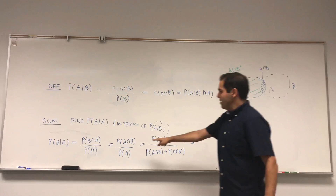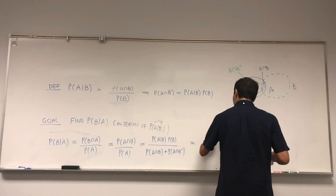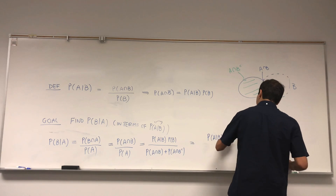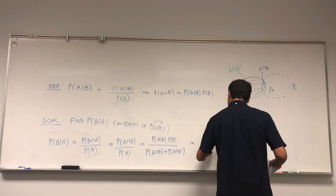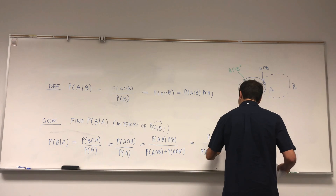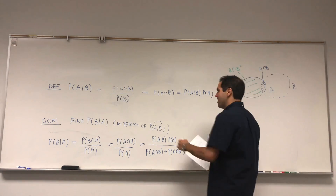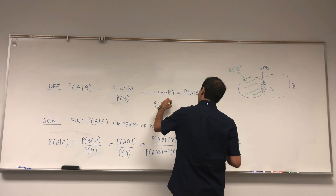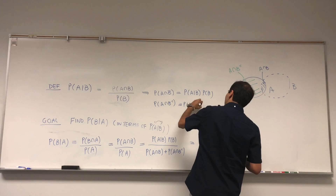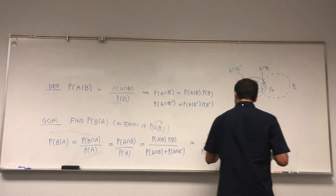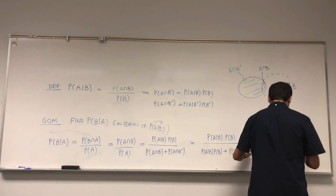By a similar result, the first term becomes probability of A given B times probability of B. For the second term, do the same thing but with B complement: P of A intersect B complement equals P of A given B complement times P of B complement. So you have the full formula with P of A given B complement times P of B complement.